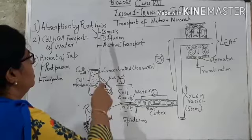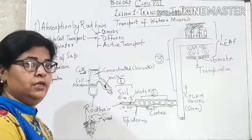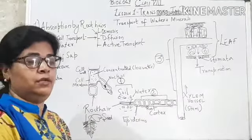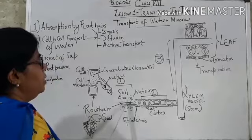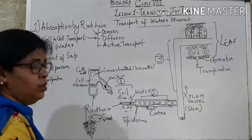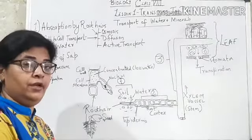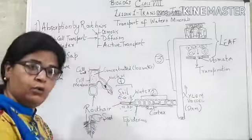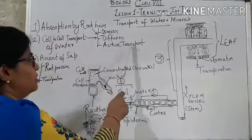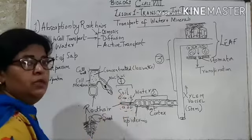The third process which helps in absorption by root hairs is active transport. Active transport needs energy because it involves the absorption of minerals — both organic and inorganic. Certain minerals are needed by plants, so they are already present in high amounts inside the root hair, but more are absorbed from the soil for maintaining plant health. This is done against the concentration gradient, that is, from lower concentration to higher concentration. That is why it is called active transport — energy is consumed by the root hair cells to take in minerals.